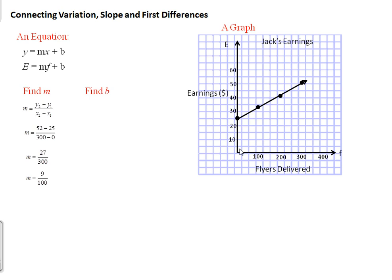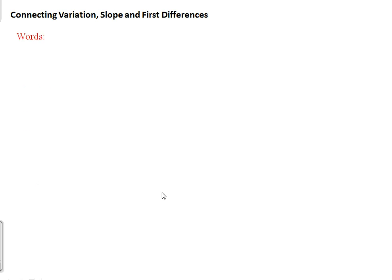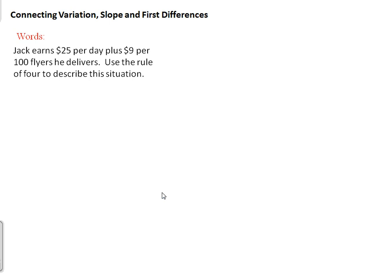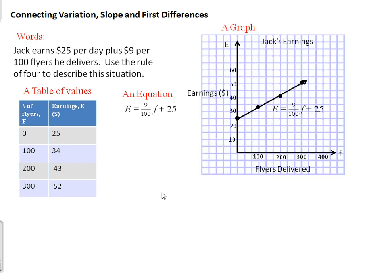When f is 0, e is going to be 25, so the initial value b equals 25. Now that we have our slope and our initial value, we substitute into our general equation. We have e equals mf plus b, or e equals 9 over 100 times f plus 25. So here we have Jack's earnings described in words — he earns $25 a day plus $9 per 100 flyers — using a table of values, an equation, and a graph. This is using the rule of four to represent one situation.